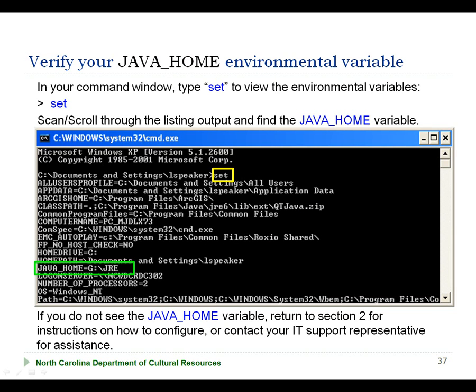In this example, the BagIt application and the Java runtime environment have been installed on the USB-attached portable disk device that is accessed through the G drive. Alternatively, the BagIt application may be installed on your local computer, and you would then access the BagIt command from your C drive.